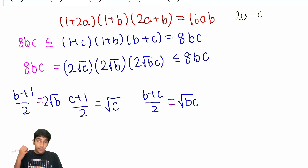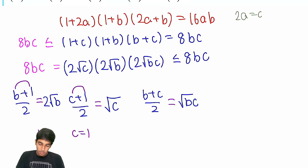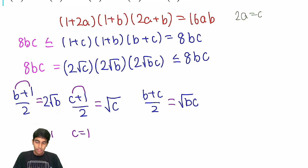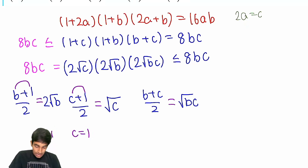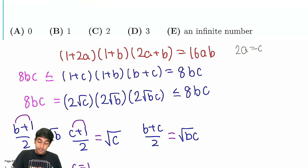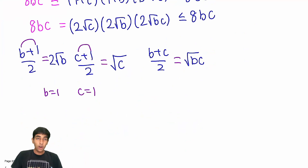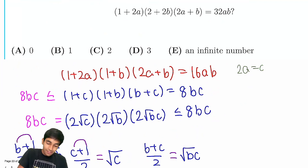From the equality cases: AM-GM equals when both terms are equal, so 1 = c giving c = 1, and 1 = b giving b = 1. Since 2a = c, we get a = 1/2. So the pair (a, b) = (1/2, 1) is indeed a solution, and it's the only one — because the only way any solution works is if all three equality cases hold simultaneously. The answer is just 1.